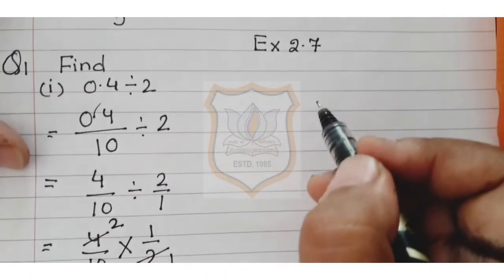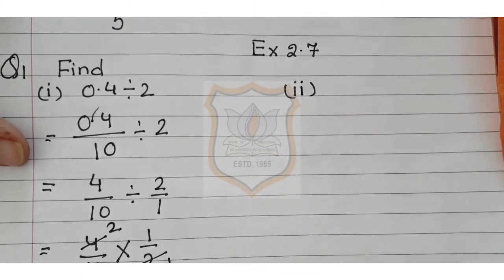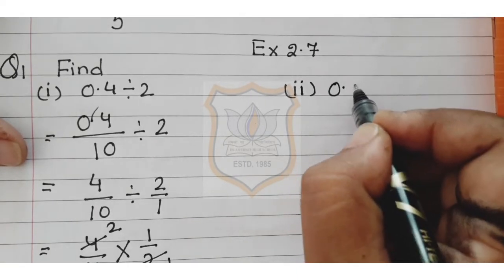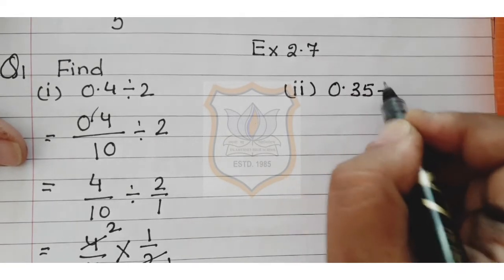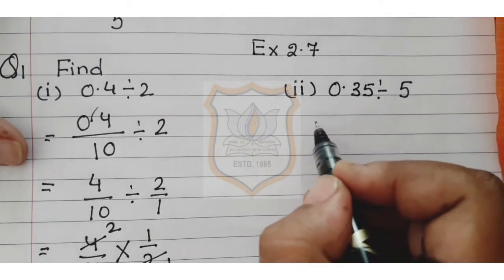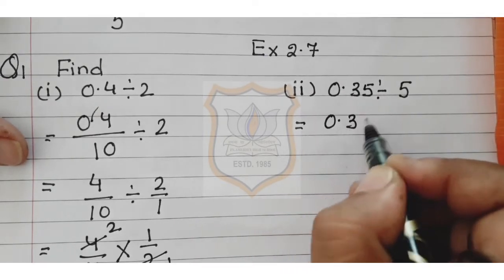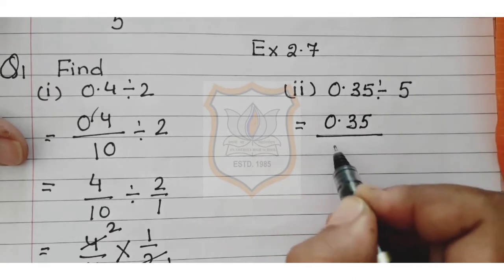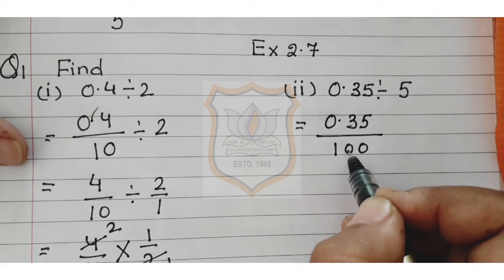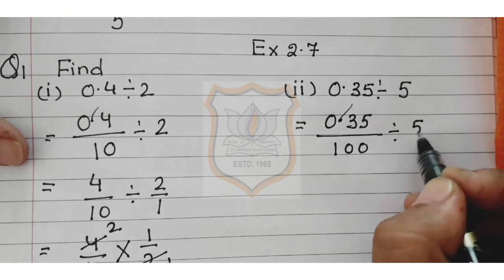Now let's solve the second part: 0.35 divided by 5. It's very easy. First we remove the decimal. 0.35 has 2 decimal digits, so we write it as 35 upon 100. Divided by 5 upon 1.